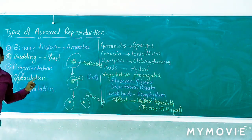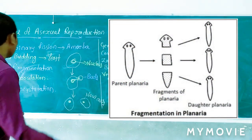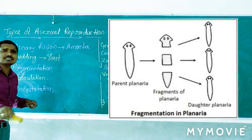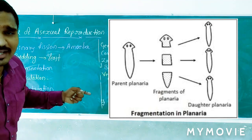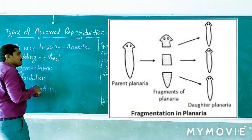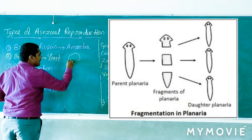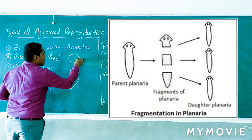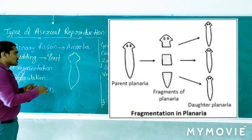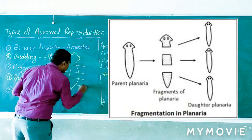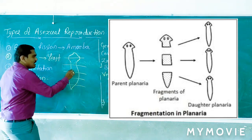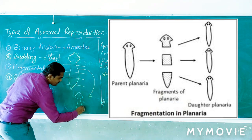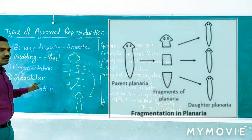The next type is fragmentation. Fragmentation means cutting into small pieces — these small individual pieces can give rise to new organisms. This occurs in planaria. If you cut planaria into small pieces, those are called fragments, and each individual fragment gives rise to a new individual species. This is the fragmentation process.